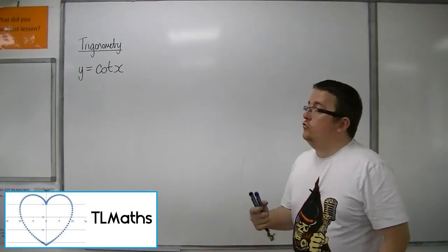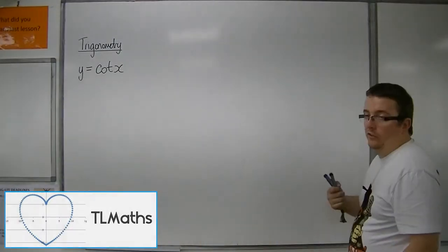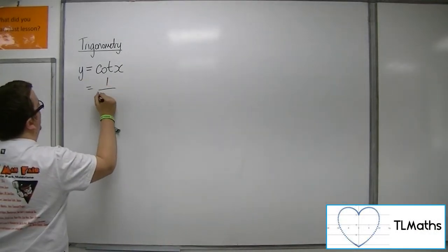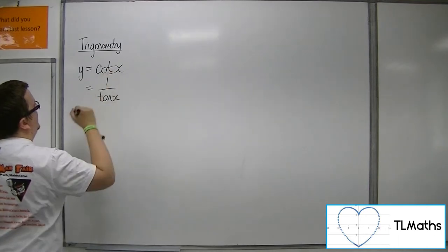Let's consider the graph of cot x, the cotangent of x. We know that this is going to be 1 over tan x due to that third letter rule.